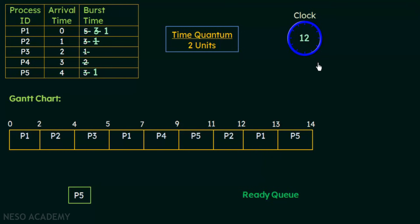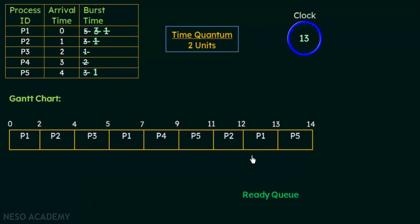At time 13, P1 was using the CPU with a remaining burst time of only 1 unit. P1 executes for 1 unit and completes its execution at time 13 — less than the time quantum so no alarm. P1 voluntarily releases the CPU and gives it to P5, the last process waiting in the ready queue. P5 is removed from the ready queue and begins its final execution, needing only 1 unit.